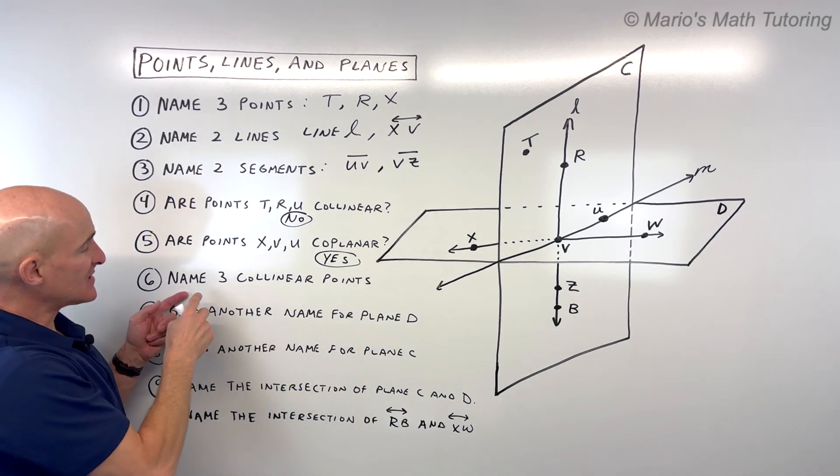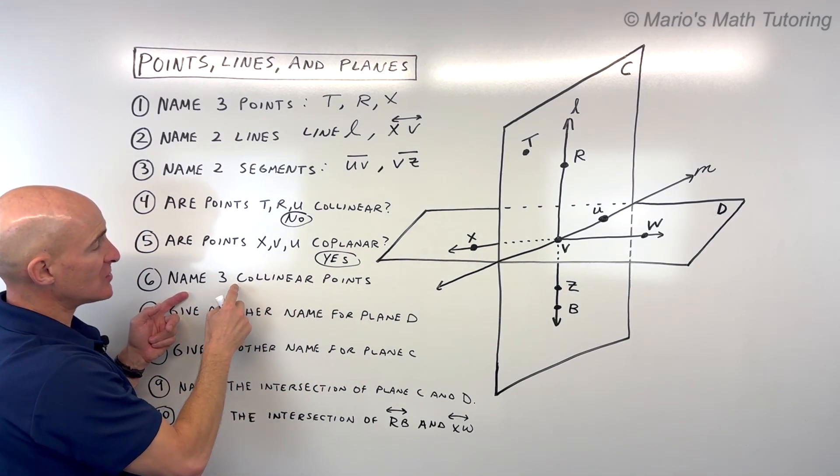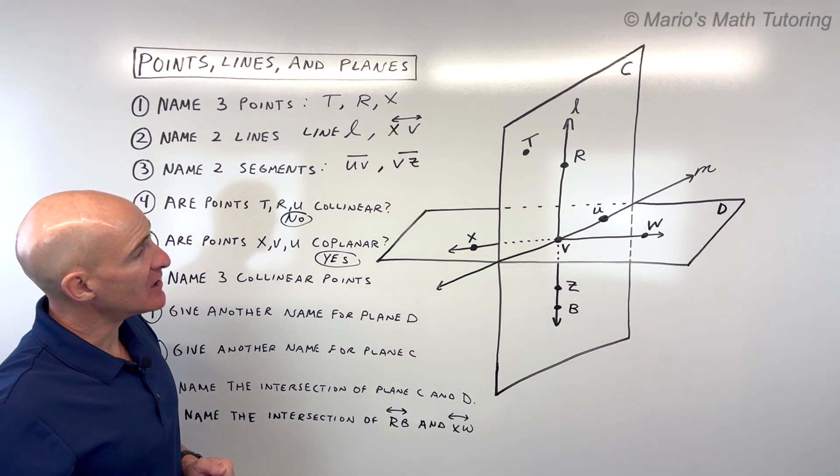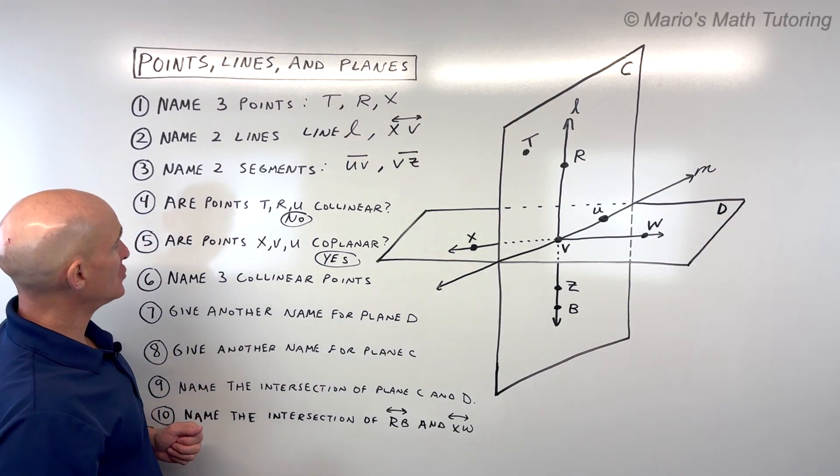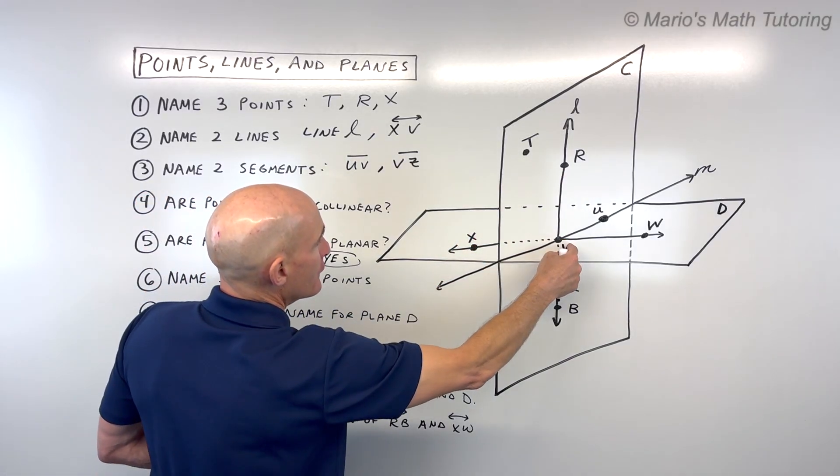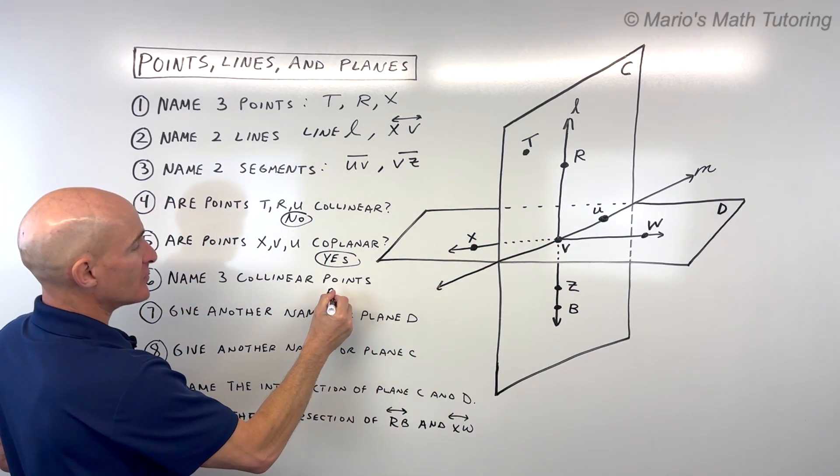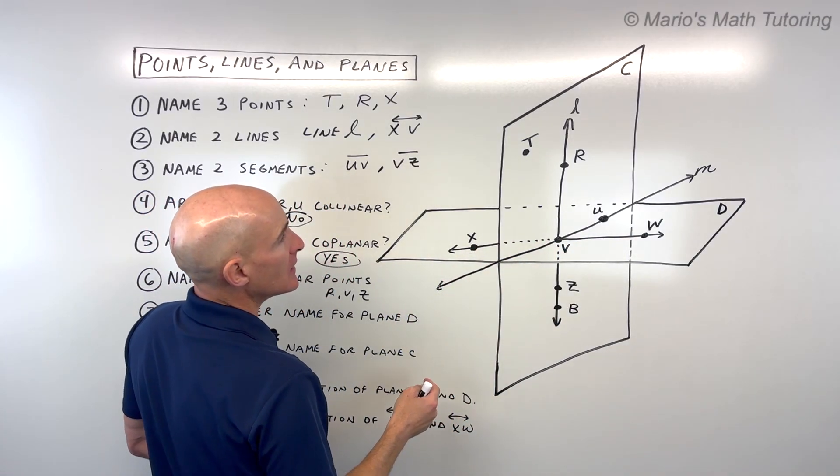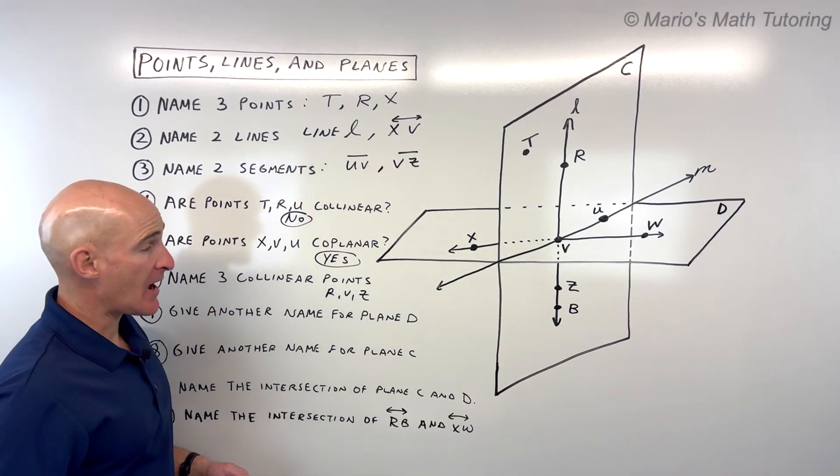For number six, it says name three collinear points. Do you see three points that are on the same line? There's a couple possibilities. We could do R, V, and Z. You could also do X, V, and W.